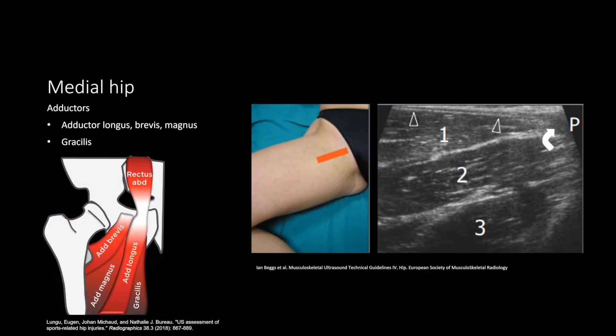For evaluation of the medial hip, have the patient lie supine in frog leg position. Look at the insertion of the iliopsoas tendon at the lesser trochanter, then move on to the muscle bellies of the adductor muscles. The three layers from superficial to deep are the adductor longus, adductor brevis, and adductor magnus. Note that the gracilis muscle is in the same superficial layer as the adductor longus, but is more medial. Follow the muscle bellies to the pubis to evaluate the tendinous insertions.